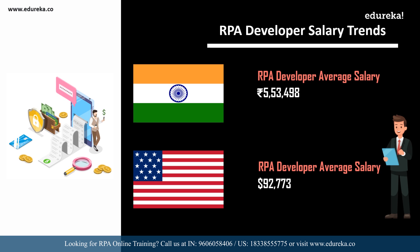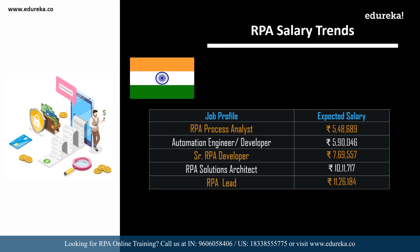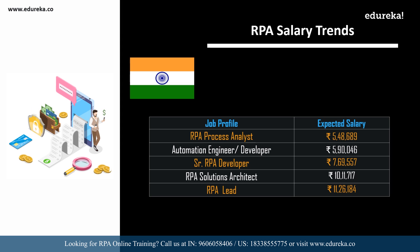Let's look at the salaries of various other job roles related to RPA in India. An RPA Process Analyst can expect around 5 lakhs 48 thousand per annum. An Automation Engineer or Automation Developer can expect 5 lakhs 90 thousand. A Senior RPA Developer can expect around 7 lakhs 69 thousand. An RPA Solutions Architect can expect around 10 lakhs 11 thousand, and an RPA Lead can expect around 11 lakhs 26 thousand.